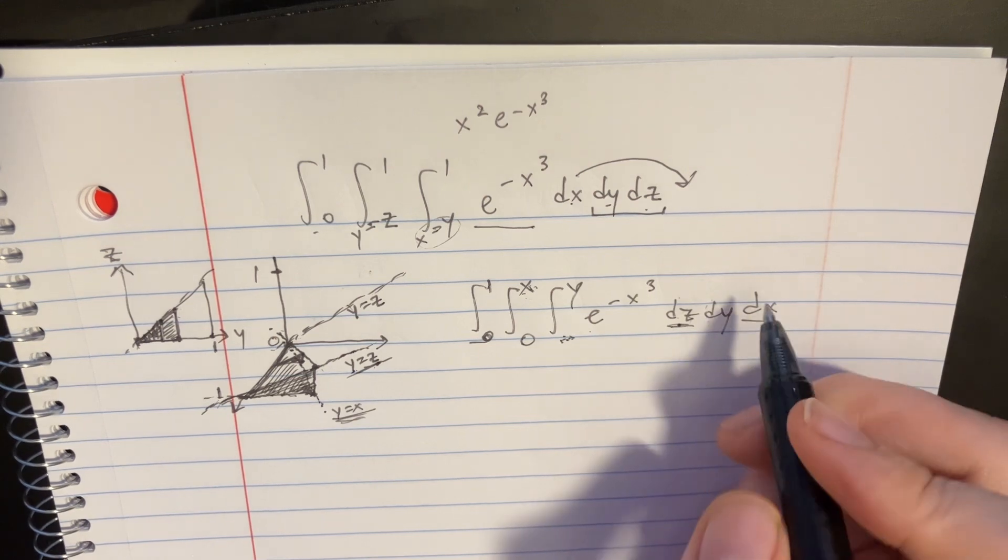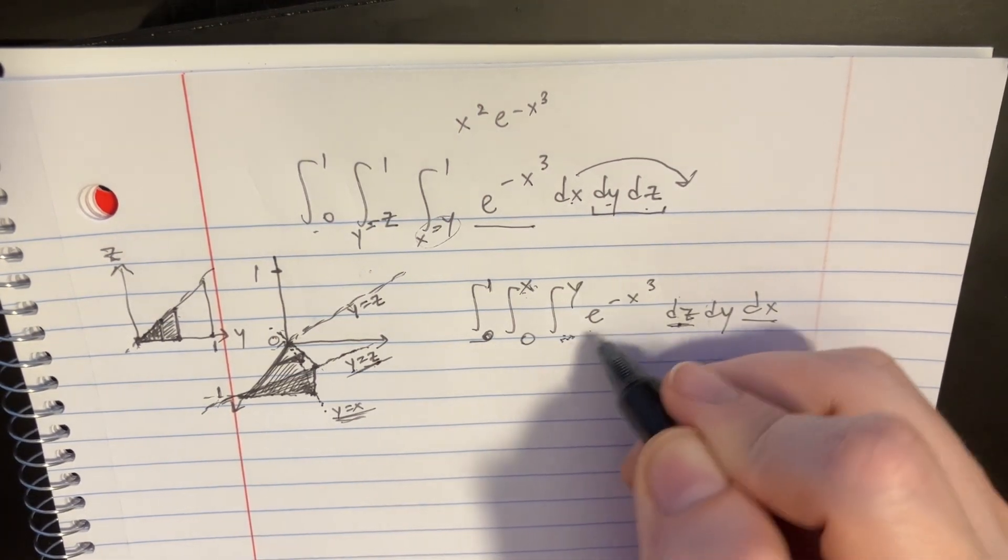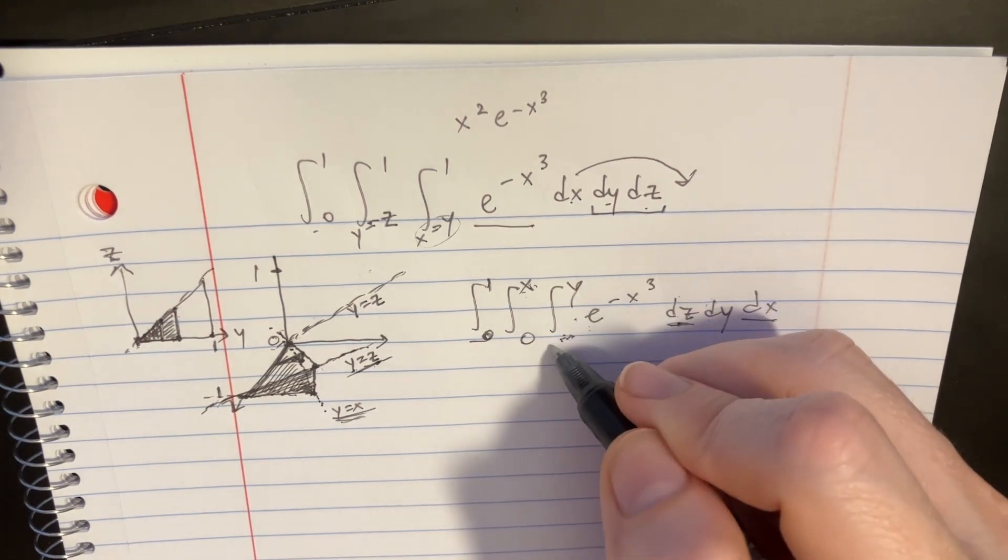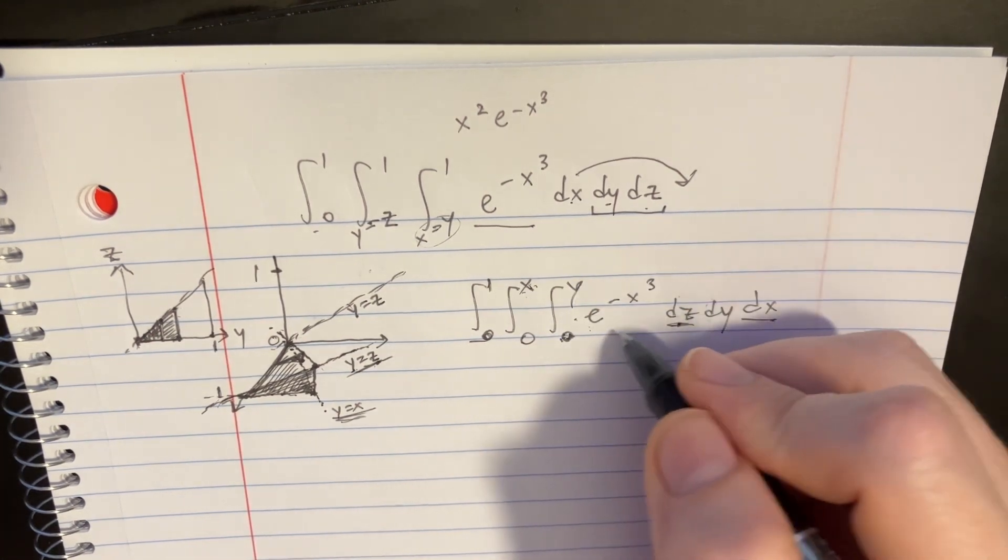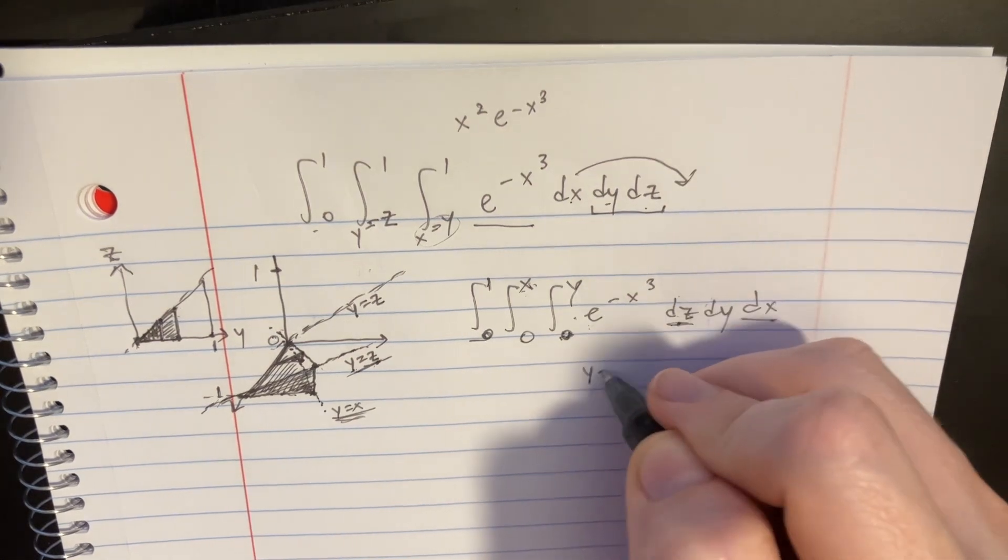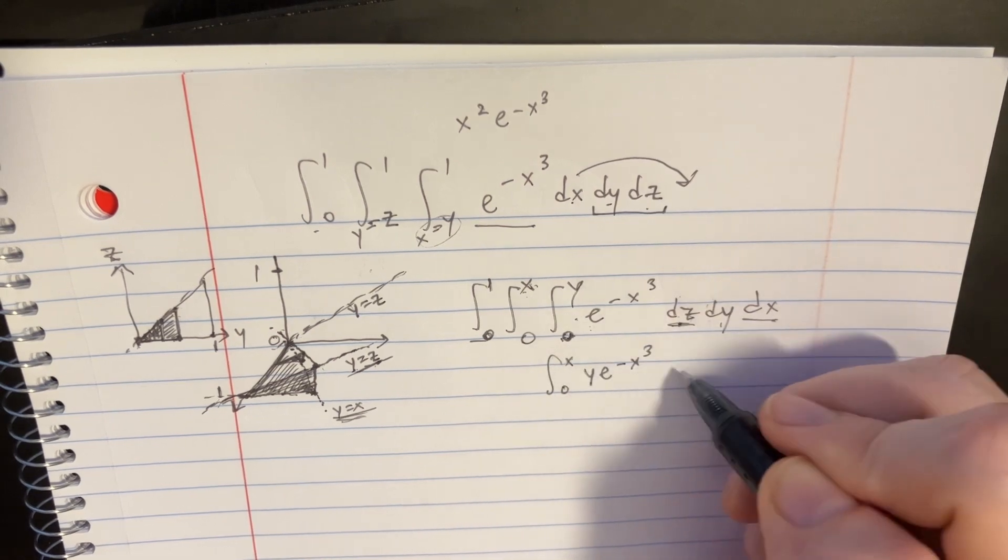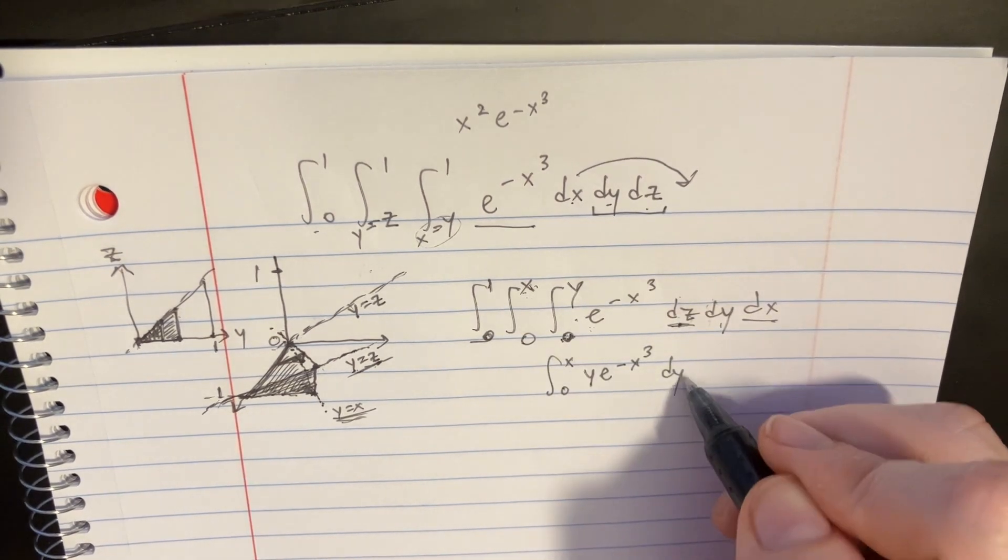So now let's go ahead and solve this. It should be really easy. When we integrate over the z's, we just stick the z in there. And then we're going from 0 to y. So it'll just transform itself into a y.